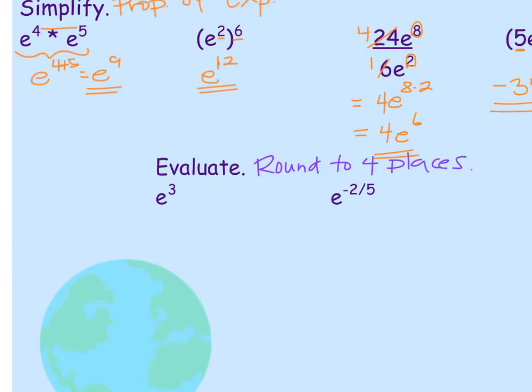e to the 3rd power. You're going to want e to show up on your calculator, and then get the little caret to show up. Raise it to the 3rd power. That means that 2.71828 decimal times itself times itself. You should get approximately 20.0855 if we round to 4 decimal places. Make sure you can get that to show up on your calculator.